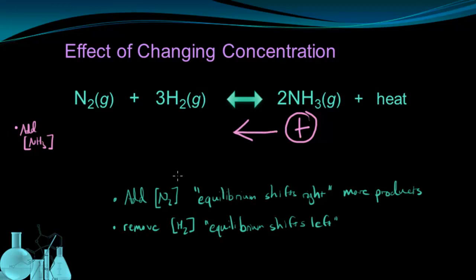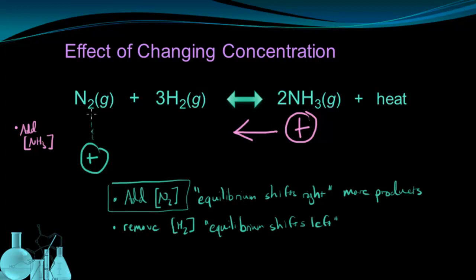This method also works with earlier examples. Let's revisit adding N2: if I add N2, that increases the reactant side, so the reactant side is greater than the product side, and the shift is to the right. This system of drawing arrows is one convenient way of figuring out which way the shift will occur, and it works pretty well.